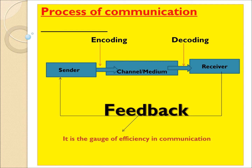The sender sends a message using encoding. When the message is transferred, the receiver uses the decoding technique. The encoding message is decoded back to the original message and received by the receiver. The receiver then sends a response message back to the sender — that response message is called feedback. Feedback is the gauge of efficiency in communication.